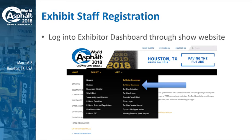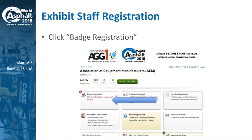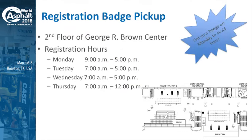For those who have not already registered your exhibit staff, you can go to worldofasphalt.com and click the exhibitor dashboard to access your login. As the exhibitor contact, you log in and register for your badges — it's the first tile on the top left. You'll go through a simple registration process to get the rest of your staff registered. When you arrive on site, registration opens on Monday from 9 to 5. We recommend you get your badge on Monday to avoid the lines.